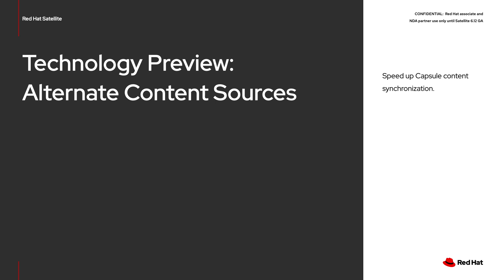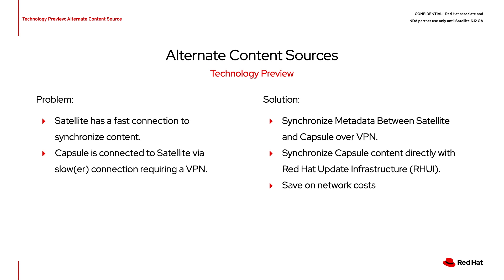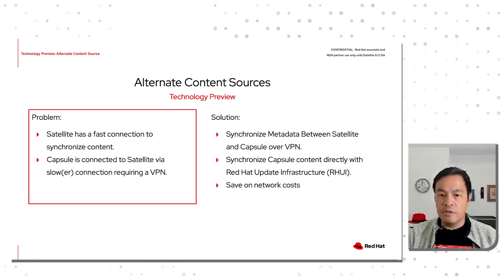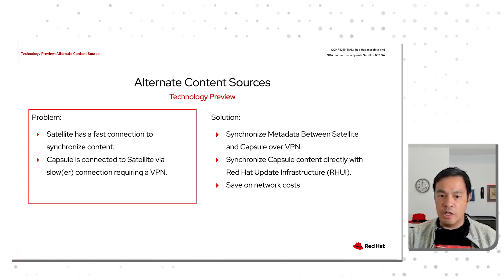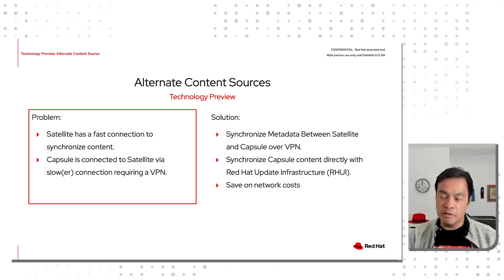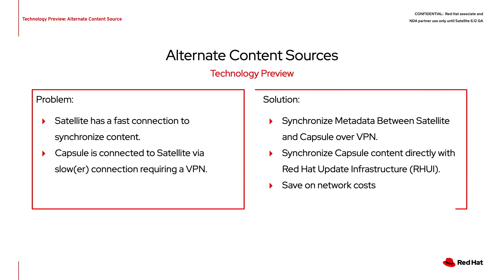Now I'll talk about a feature in Technology Preview for Satellite 6.12 called Alternate Content Source Synchronization. The use case for this feature is to enable fast capsule synchronization. For example, an organization may have a Satellite server that synchronizes content over a fast internet connection. However, the capsule is located on a remote network connected to Satellite over a VPN with a slower connection. If the amount of content synchronized between Satellite and capsule is large, the process will take longer than synchronization between Satellite and the Red Hat content delivery network. If the capsule server can connect directly to the internet, it will likely synchronize content quicker and save on network bandwidth costs. This could create significant cost savings on public cloud infrastructure.